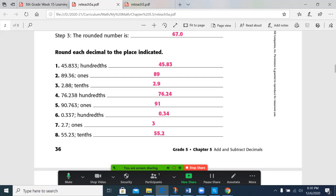Remember, if the spot to the right is 0 to 4, the digit in the place value indicated stays the same. If it's 5 or greater, that digit goes up by 1.